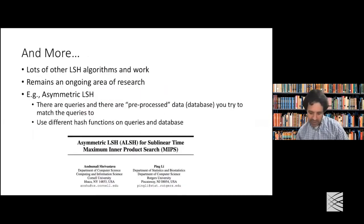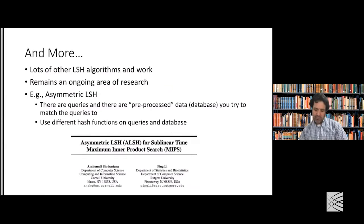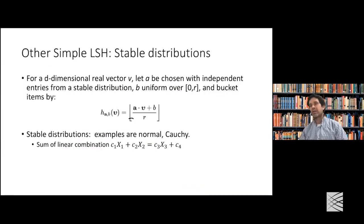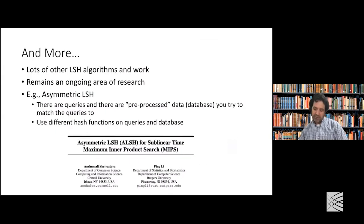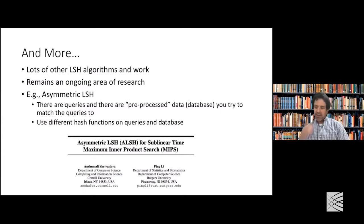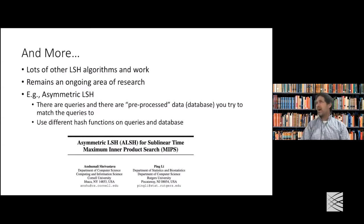There's more — this is still an active area of research. Something called asymmetric locality-sensitive hashing: in all the approaches discussed, you treat the two things you're comparing the same way. But in asymmetric LSH, there's pre-processed data in a database and you're matching a query to it — you may actually use different hash functions on the queries versus the database, and amazingly that can improve things.